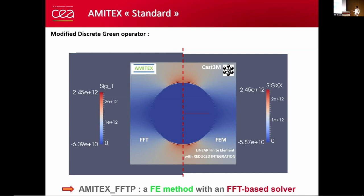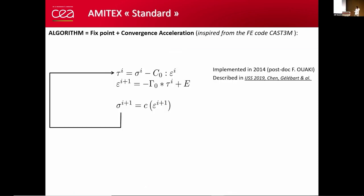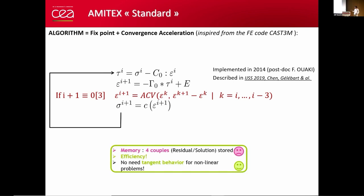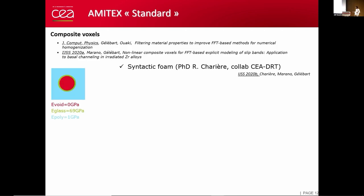An additional point is that we don't use only the fixed point algorithm. We have added convergence acceleration techniques. At each iteration, we store the solution, the strain epsilon k and the residual epsilon k plus one minus epsilon k. We store four different couples during the iterations. And every three iterations, we propose something new based on this knowledge. It's much more efficient than the simple fixed point algorithm. The other interesting point is that for non-linear behavior, you don't need to define and implement the tangent behavior.